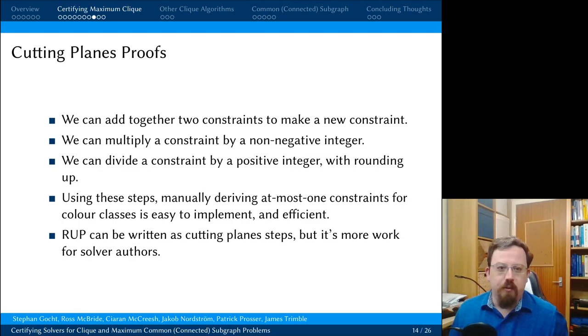So we need to use a cutting-planes proof system to help out. You can think of cutting-planes as being to pseudo-boolean solving what resolution is to SAT solving. In the cutting-planes proof system, we can take two constraints and we can add them together to make a new constraint. We can multiply a constraint by any non-negative integer. We can divide a constraint by a positive integer with rounding up. Using just these steps, we can manually derive at most one constraints for colour classes, and it's very easy to do this. It's worth pointing out that reverse unit propagation can be written as a series of cutting-plane steps as well, but it is more work for solver authors to do this. It involves a lot more bookkeeping and keeping track of things. Reverse unit propagation is a convenience rather than a core feature of a proof system.